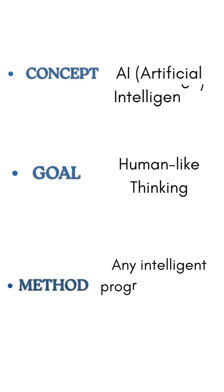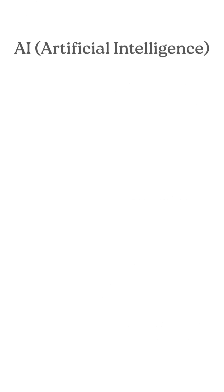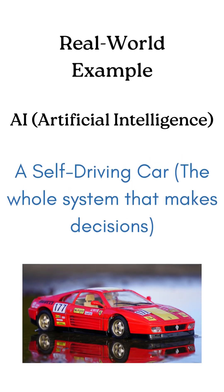AI or Artificial Intelligence is when machines think and act smart like humans. For example, self-driving cars use AI to see the road, make decisions and drive safely.